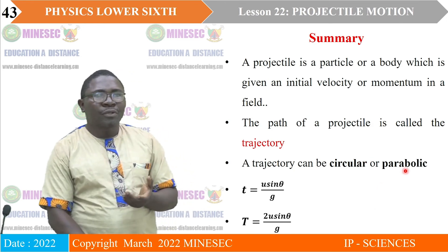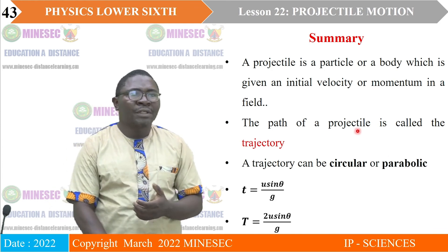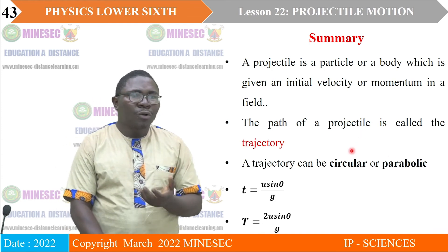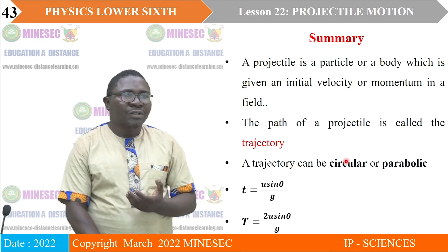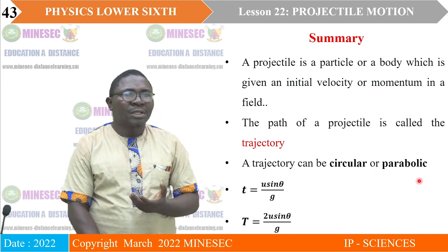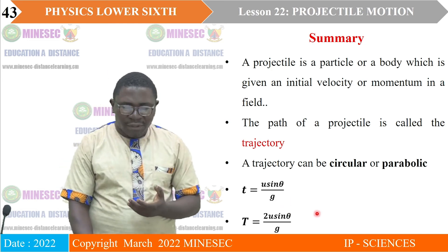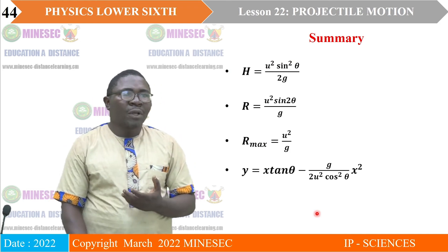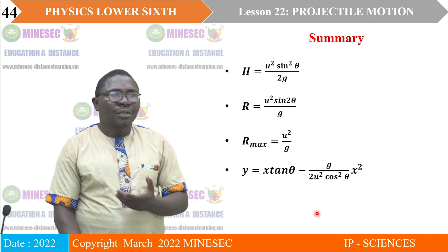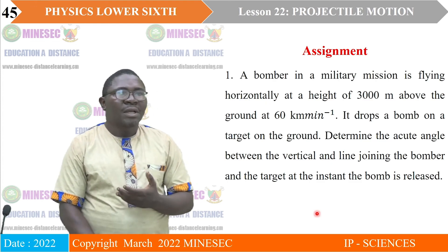Summary: a projectile is a particle that can undergo both horizontal and vertical motion, which are independent of each other. The path of a projectile is called a trajectory, and the trajectory can be circular or parabolic. Key formulas covered include: time of flight, time to reach maximum height, maximum height, range, maximum range, and the equation of path.